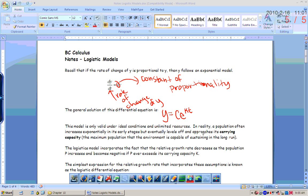Now this model is only valid under ideal conditions and unlimited resources. This is a growth population model, and we use that quite a bit. But in reality, a population often increases exponentially in its early stages, but eventually levels off and approaches its carrying capacity.